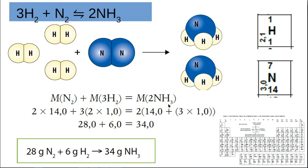So how does this work in real life? If we look at the reaction between hydrogen and nitrogen to make ammonia — a reversible reaction — we've got three hydrogen molecules and one nitrogen molecule. Remember, hydrogen and nitrogen are diatomic. Whenever you balance equations, you have to know your diatomic molecules. This is actually the balanced equation: three hydrogens plus one nitrogen go to two ammonia.